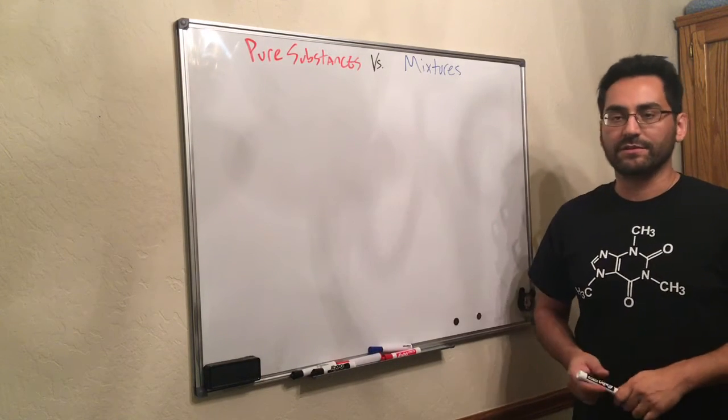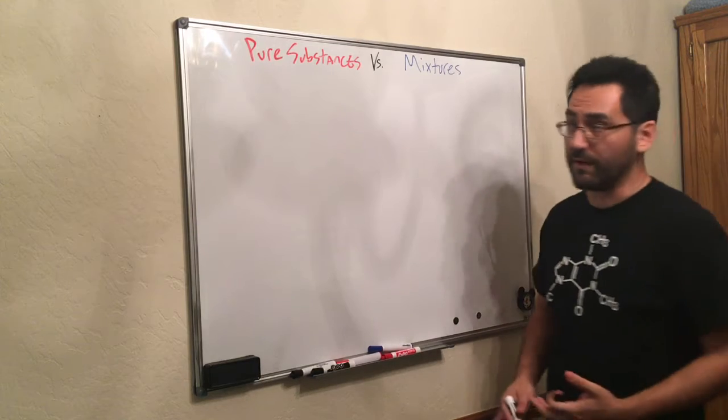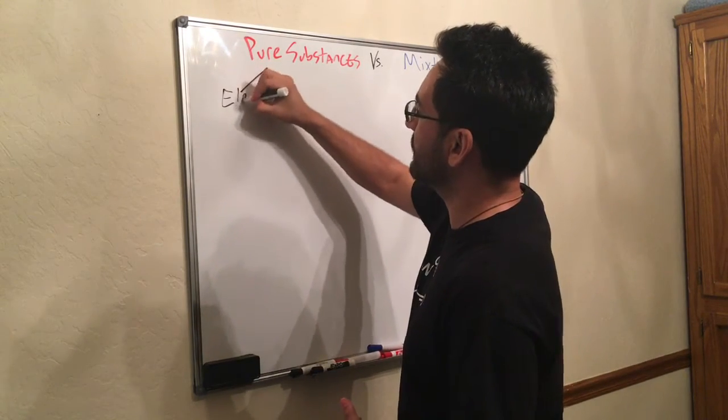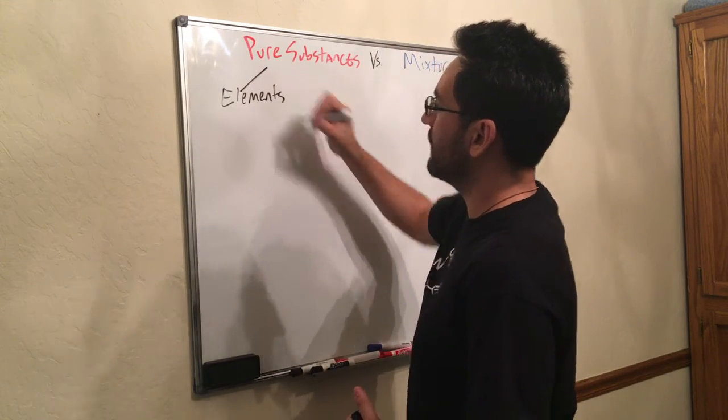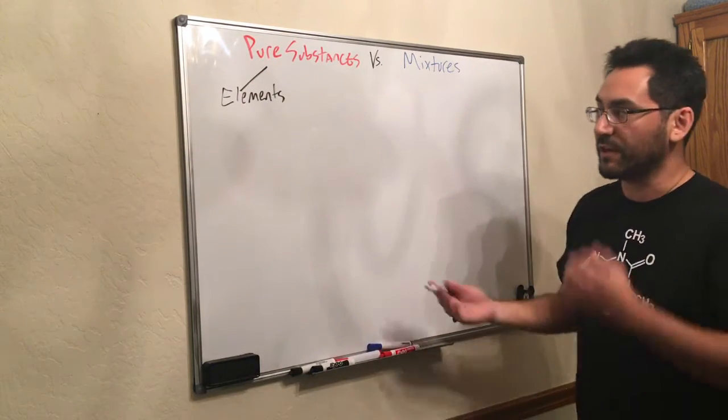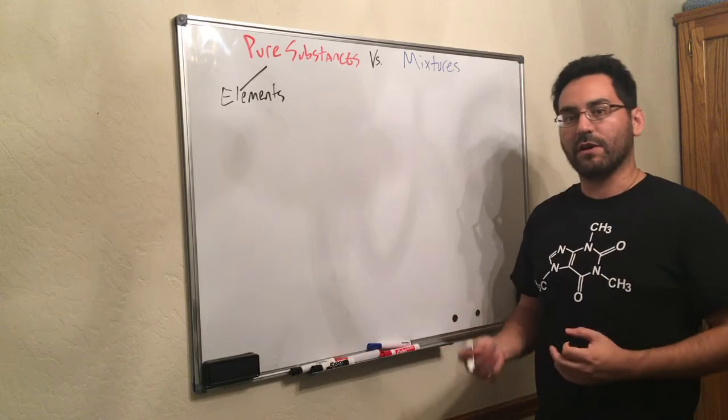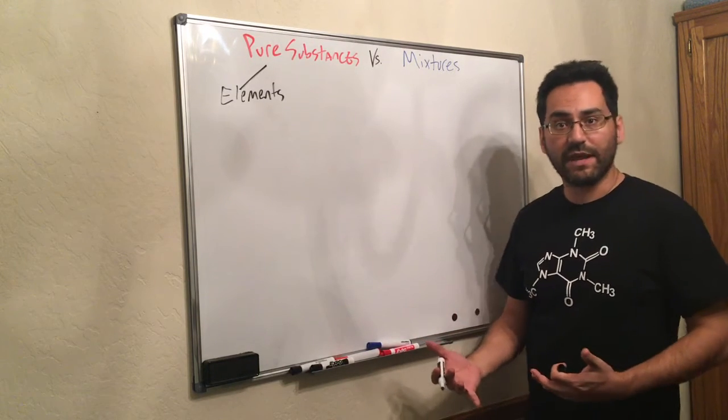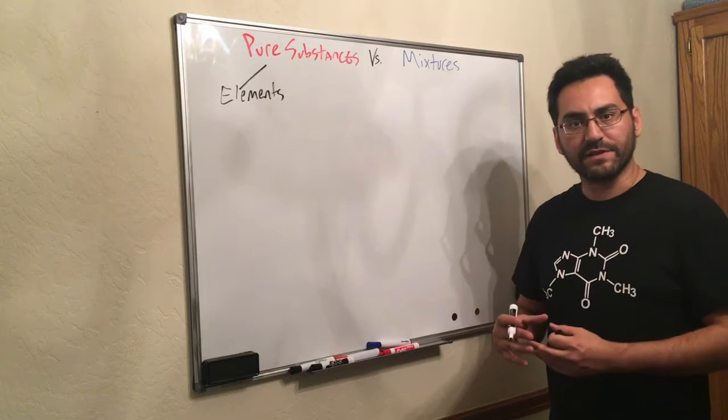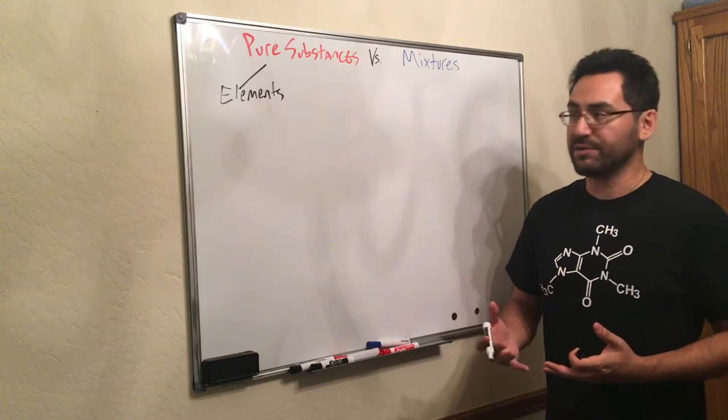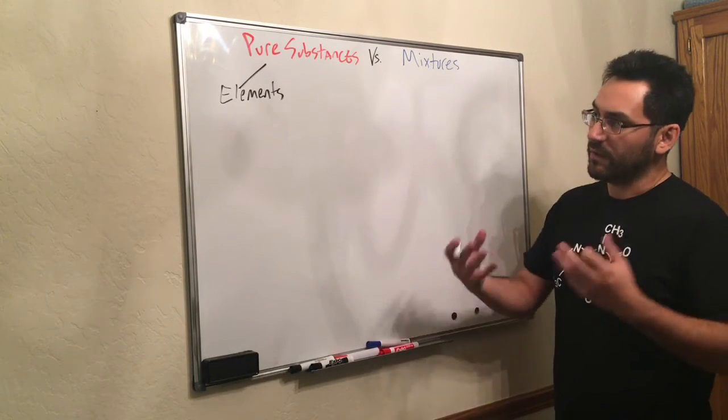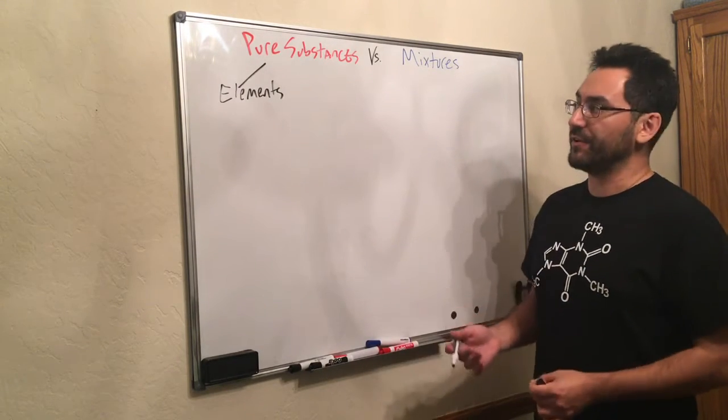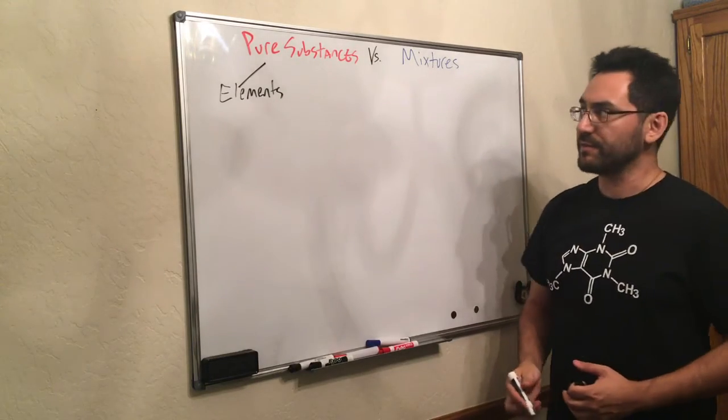Now as far as pure substances go, there are two things that qualify. One is elements. Elements are pure substances. We've talked about how elements are the different kinds of building blocks, the different kinds of atoms that we have, but atoms are the simplest of a particular material. So atoms are pure because they are the smallest bits of material. So elements fall under the pure substances.